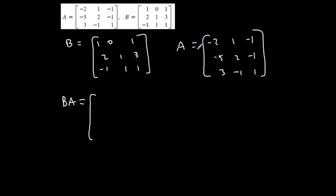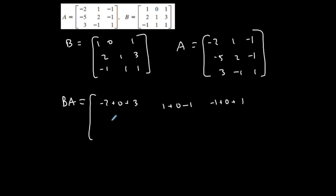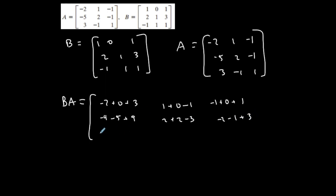I want to compute B times A now. This is a 3×3 times a 3×3, giving a 3×3. Row one, column one: negative two plus zero plus three. Row one, column two: one plus zero minus one. Row one, column three: negative one plus zero plus one. Row two, column one: negative four minus five plus nine — that looks good. Row two, column two: two plus two minus three. Row two, column three: negative two minus one plus three — that looks good. Row three, column one: two minus five plus three — good. Row three, column two: negative one plus two minus one. Row three, column three: one minus one plus one.